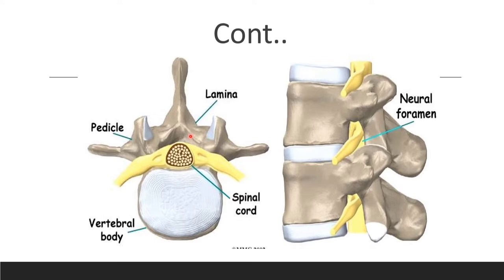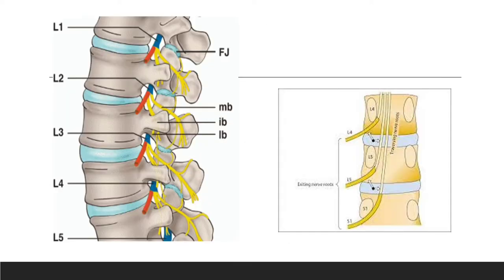Here you can see the spinal cord passing through the vertebral canal. Through the intervertebral foramen, there is a nerve root exiting from the spinal cord. Between two vertebrae there is one exiting nerve root and one traversing nerve root.